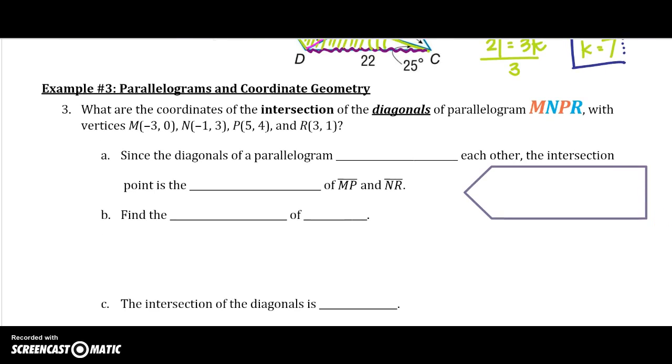We are going to use coordinate geometry with our parallelogram. So, what are the coordinates of the intersection of the diagonals of parallelogram MNPR with vertices negative 3, 0, negative 1, 3, 5, 4, and 3, 1.